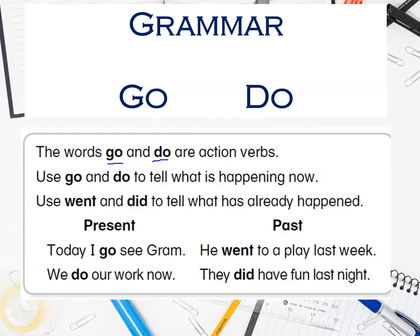We use the past tense of the two verbs 'go' and 'do' — which are 'went' and 'did' — to tell what has already happened, meaning it happened and it's done. For example, we can say: 'I did my homework yesterday,' 'Last year, I did an amazing work in learning English,' and 'Last week, I went to the park.'